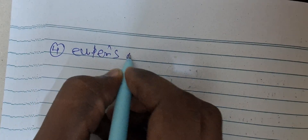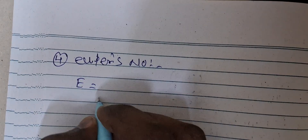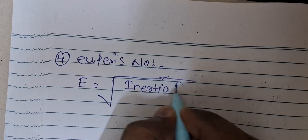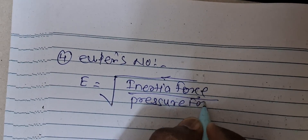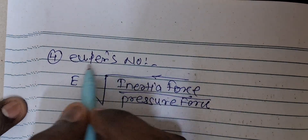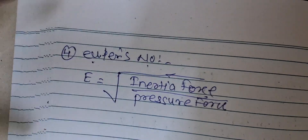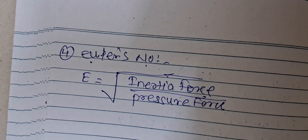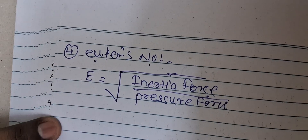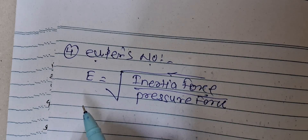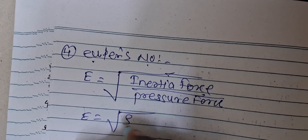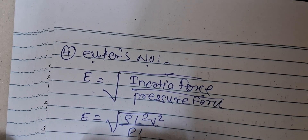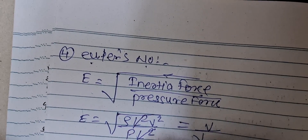The fourth definition is Euler's number, denoted by E. It is the ratio of inertia force to pressure force. Euler was a scientist who described this concept — Euler, Mach, and Weber are scientists whose names are used for these dimensionless numbers. The formula is E = √(ρL²V² / PL²) = V / √(P/ρ).